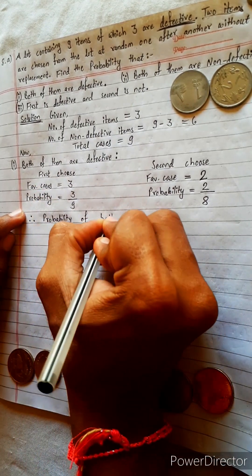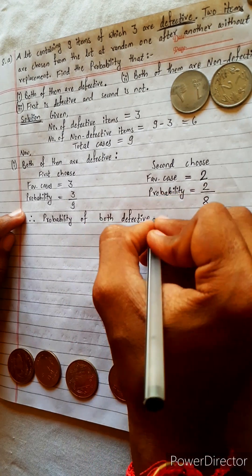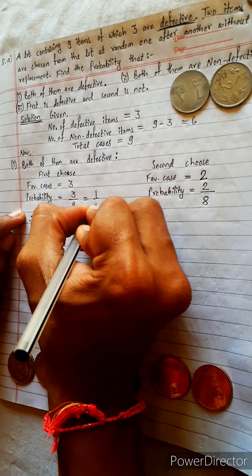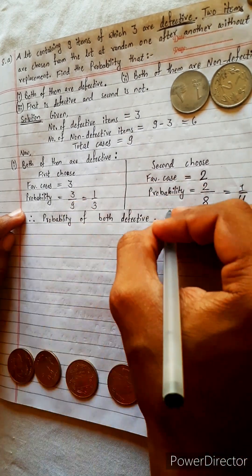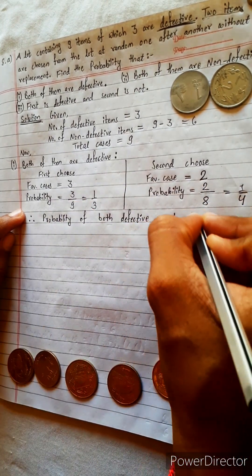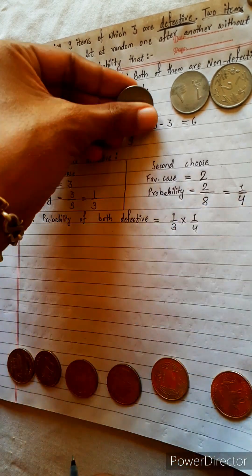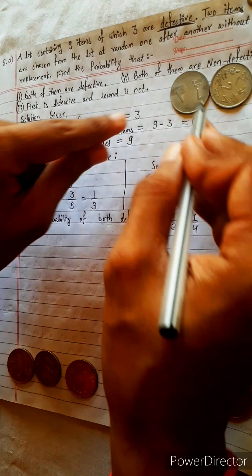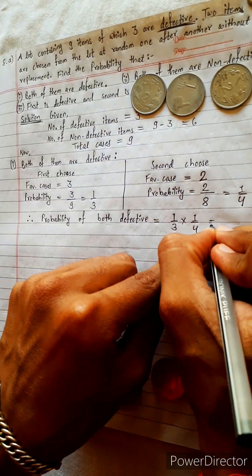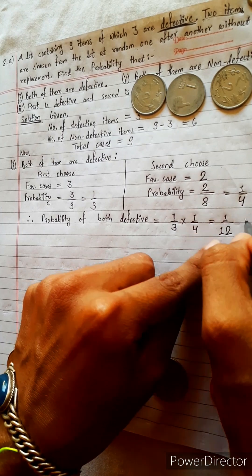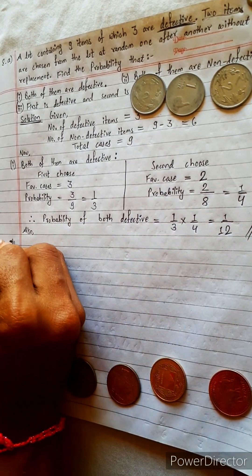Probability of both defective equals 3 by 9, which is 1 by 3, multiplied by 2 by 8, which is 1 by 4. We multiply these two because we are doing this serially — first time choose, and second time choose again. So this gives 1 by 12.